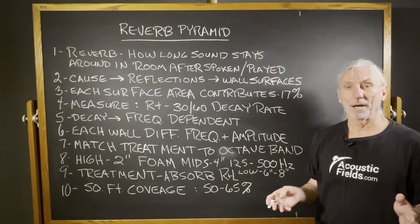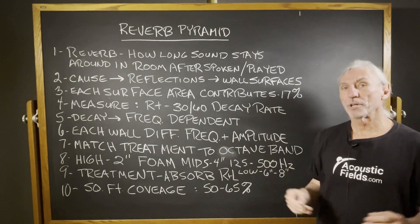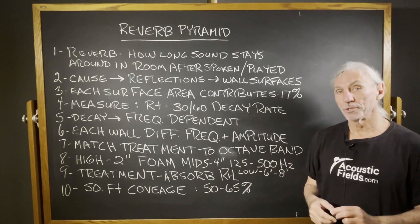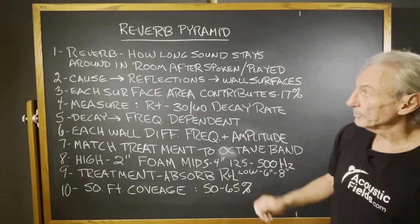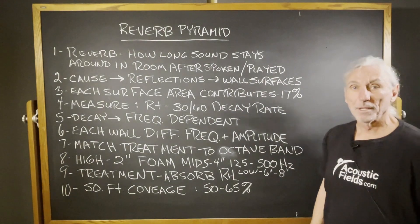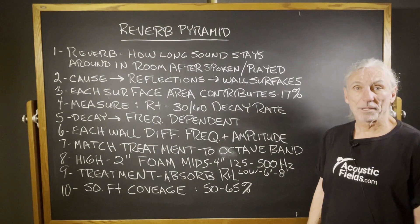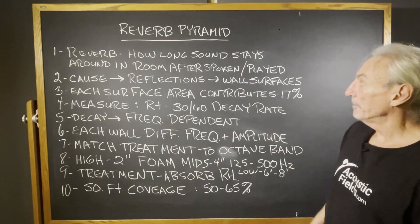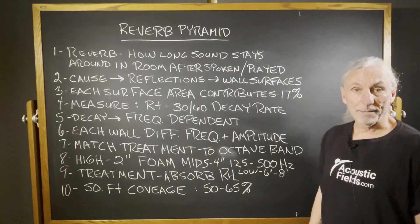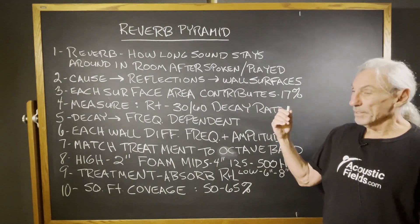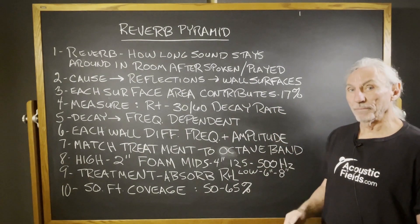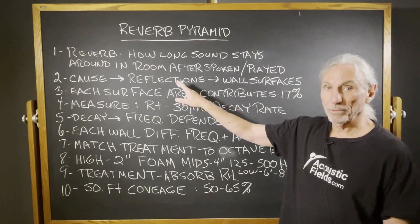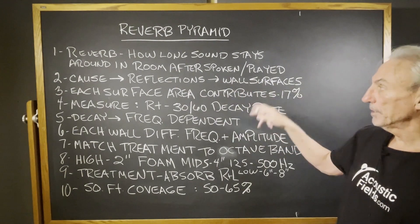Reverberation is a problem a lot of larger rooms have. Reflections off wall surfaces — churches are a big problem. It has a direct effect on speech intelligibility and how many words in a sentence we can understand and hear. It's how long the sound stays around in a room after it's been spoken or played. It just hangs out in the room, mainly due to the reflections off all the wall surface areas.